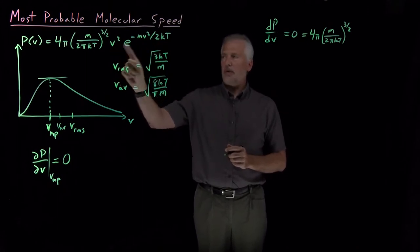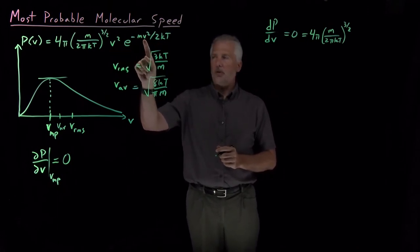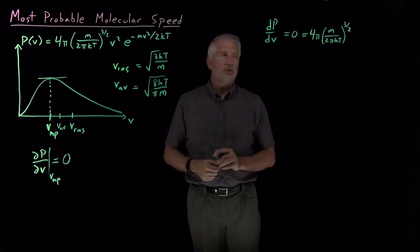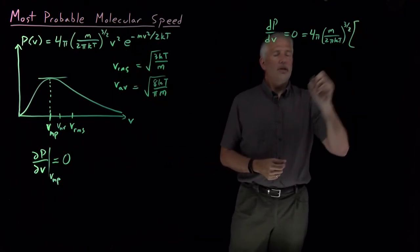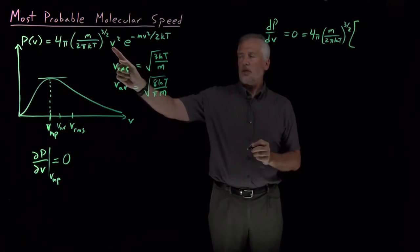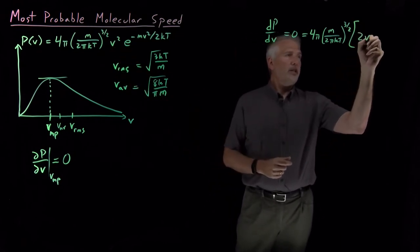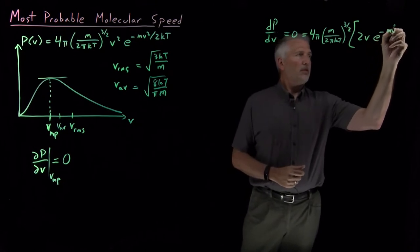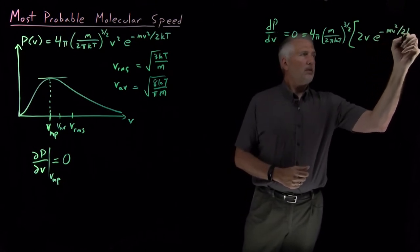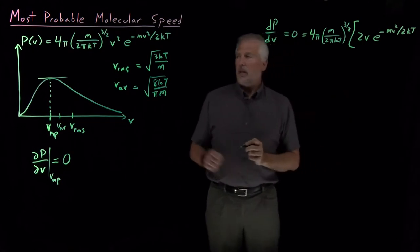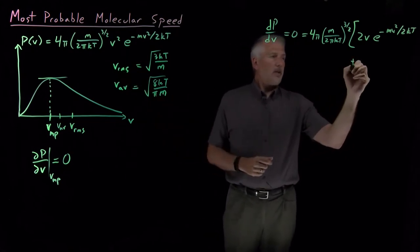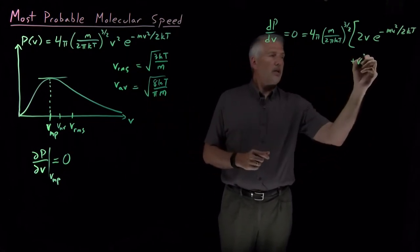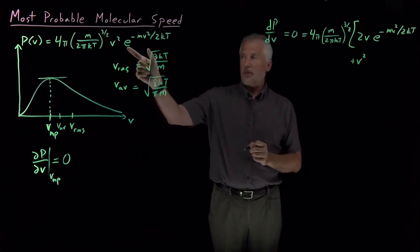V squared in the prefactor and then a V squared in the exponent. So I need to use the product rule. The derivative is these constants times the derivative of V squared, which is 2V, multiplied by the exponential. And I also have a V squared.